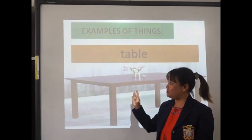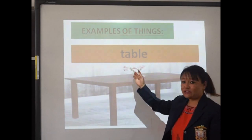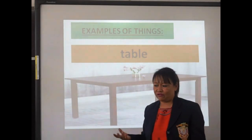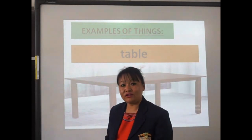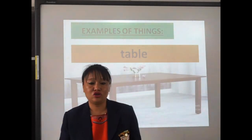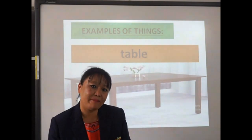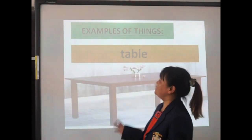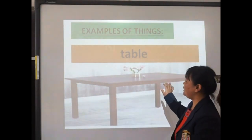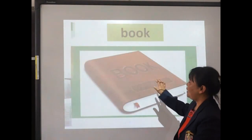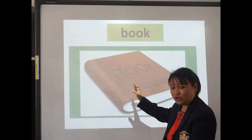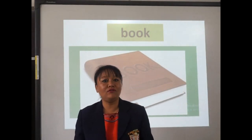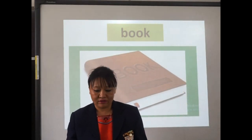An example of things: table, chair, duster, chalk, pencil — these are the examples of things. And book is also the example of things.